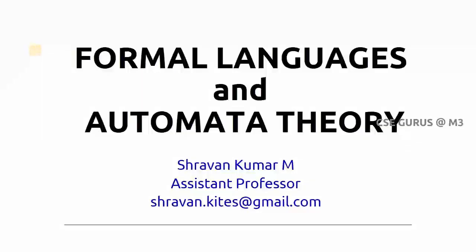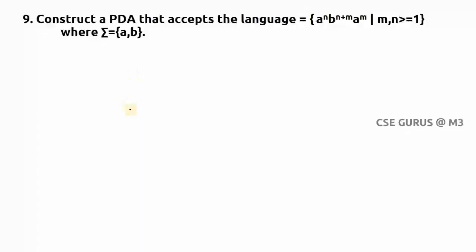Hi friends, welcome to the class of formal language and automata theory. Coming to question number nine: construct a pushdown automata that accepts the language a^n b^(n+m) a^m, where m, n are greater than or equal to one.